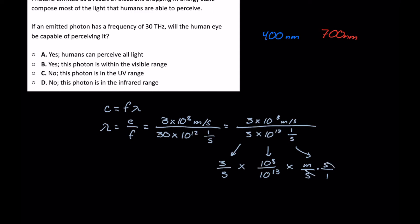So now what we're left with is 1 times 10 to the negative 5 meters.